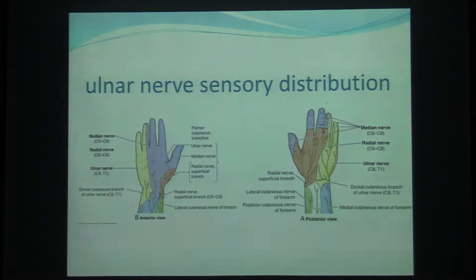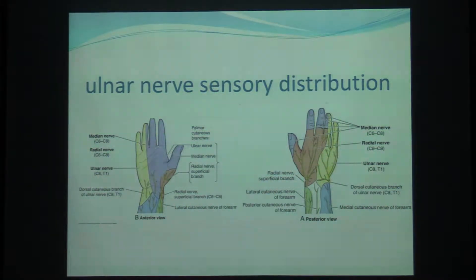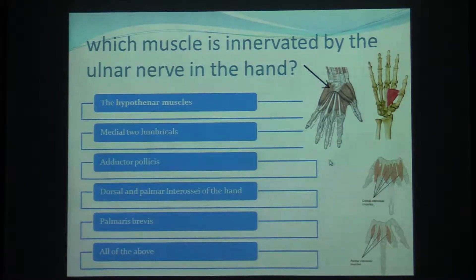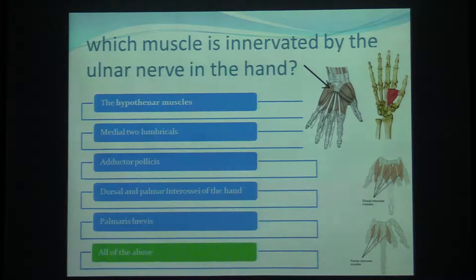From this presentation alone, we can understand that we are talking about the ulnar nerve. As a reminder, the ulnar nerve sensory distribution covers the one-and-a-half medial digits and their corresponding parts of the palm. Which muscles are innervated by the ulnar nerve in the hand? The answer is all of the above — to emphasize why our patient in this case has weakness in the left hand, because it innervates a lot of muscles in the hand.